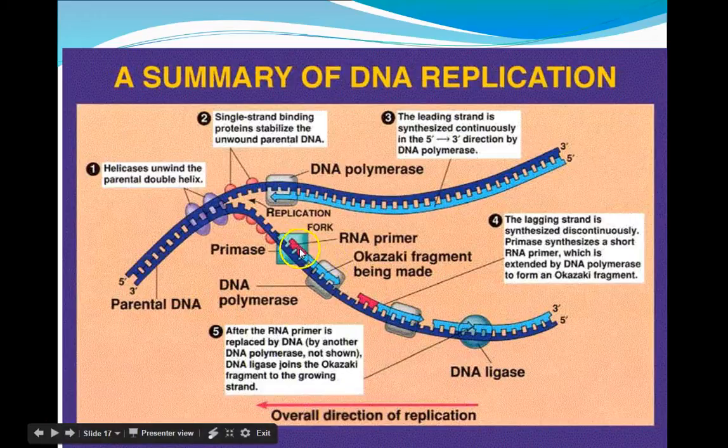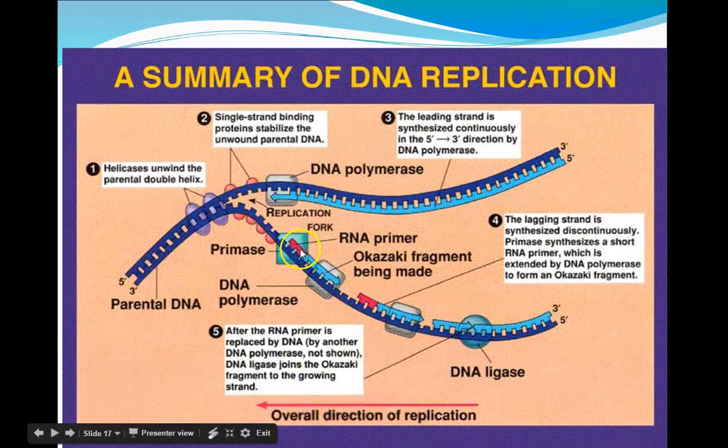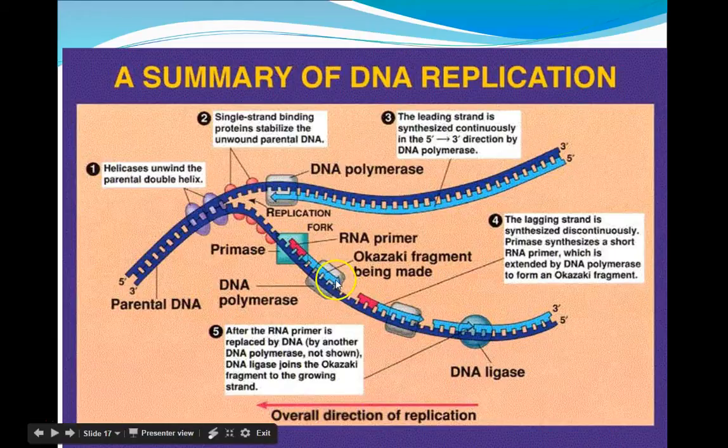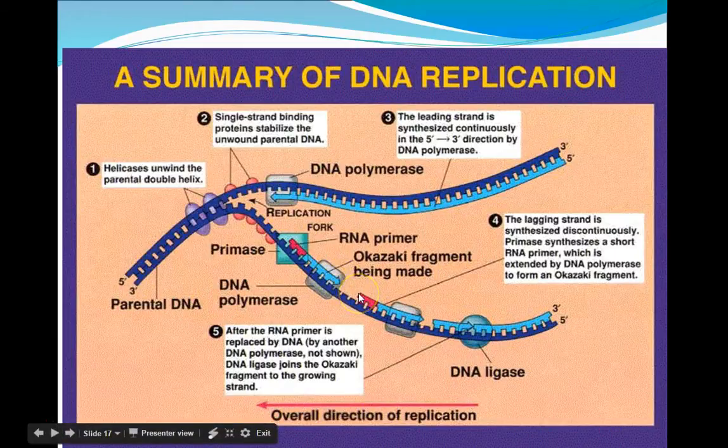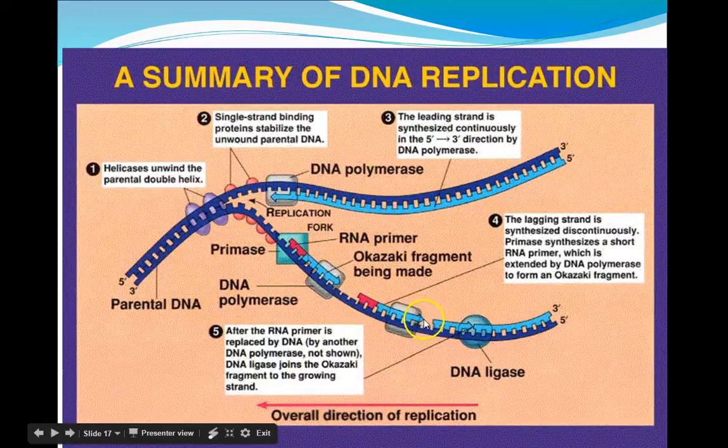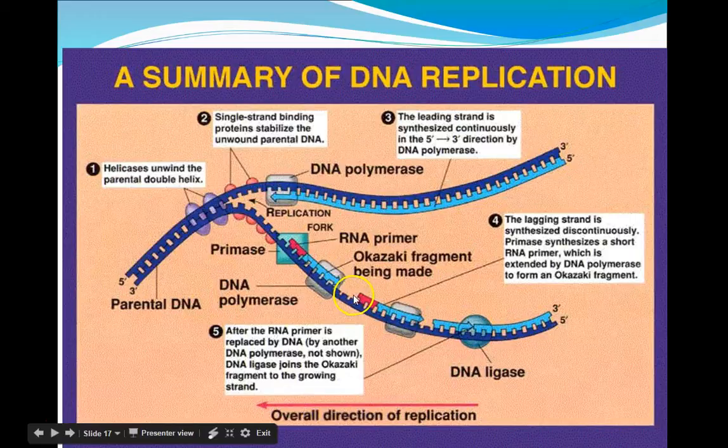So what will happen is, polymerase will identify this RNA primer and start building in a 5 to 3' orientation on the lagging strand. However, it will end up stopping when it reaches the next primer. So what you end up having is a gap between the two strands that were just built discontinuously.